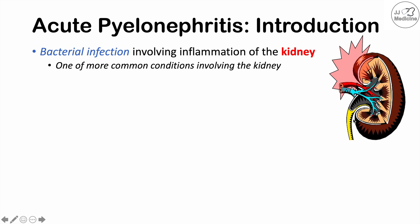Acute pyelonephritis is actually one of the more common conditions involving the kidney. There is also chronic pyelonephritis, which occurs almost exclusively in children who have major anatomical abnormalities in their kidney or renal system. From now on, I'm going to refer to acute pyelonephritis simply as pyelonephritis.